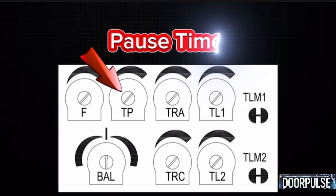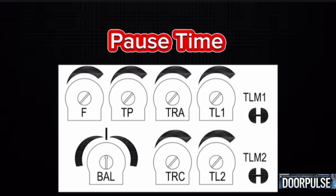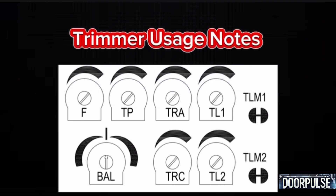5. Pause time (TP) — sets the time interval between the end of the opening maneuver and the beginning of the closing maneuver in automatic mode. Adjust this parameter to provide an appropriate delay that allows users to pass through safely before the gate begins to close. Trimmers should always be adjusted with precision to ensure proper operation. Verify adjustments by running multiple test cycles to confirm functionality and safety compliance. If external conditions like uneven ground or gate weight cause irregularities, additional fine-tuning may be required.